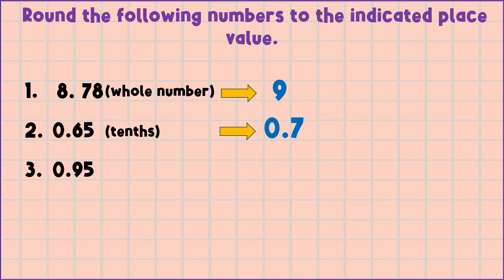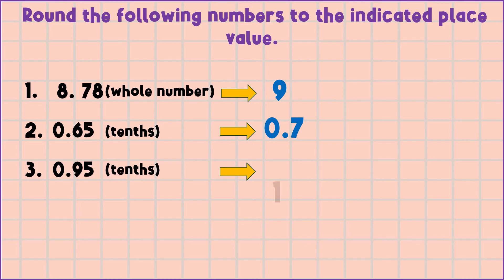Another number: 95 hundredths — round it off to the nearest tenths. The answer is equal to 1. The rounding digit is 9. Right of 9 is 5. 5 is a round up digit, so we add 1 to 9. 9 plus 1 is equal to 10. We regroup 1. The final answer is 1.